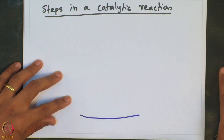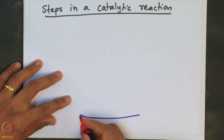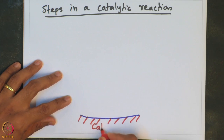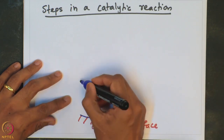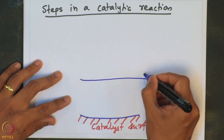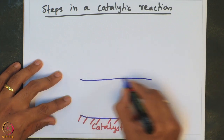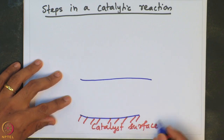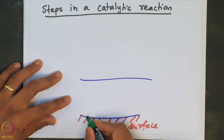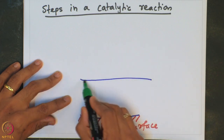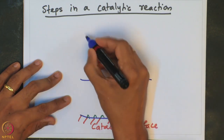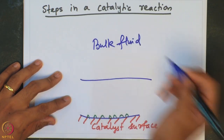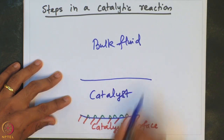Suppose we depict the surface of a catalyst. This is the boundary or the interface between the bulk fluid outside and the exterior surface of the catalyst. This is the catalyst surface where the active sites are present. And if this is the exterior surface of the catalyst which is in contact with the bulk fluid, the bulk fluid is present here, and this is the catalyst.